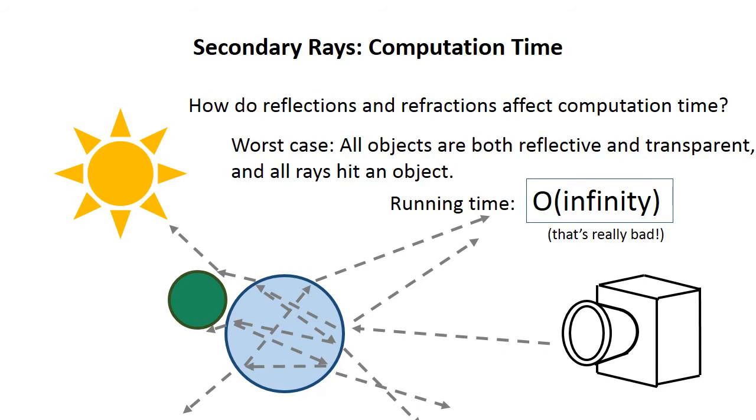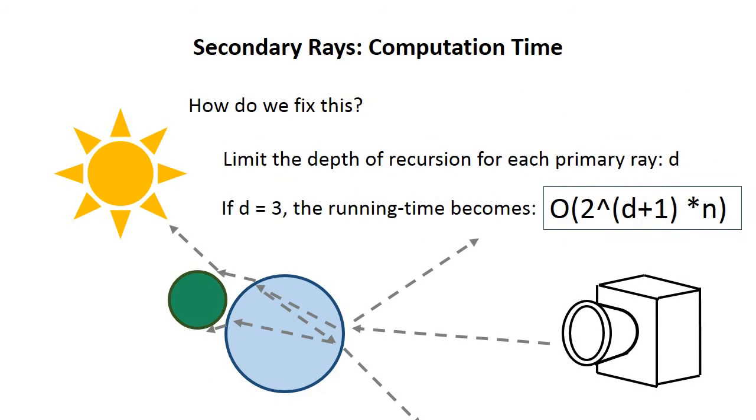So the question is, how much do these reflections and refractions affect our computation time? In the worst case, all of our objects are both reflective and transparent, and all rays will hit an object, which means our running time is O of infinity. That's really bad, and that happens because when you shoot a ray at a transparent reflective object, if it refracts into the object, it can bounce around inside of it forever. We solve this problem by limiting the depth of the recursion for any given primary ray, which means that the upper bound on our asymptotic running time is still only O of N.